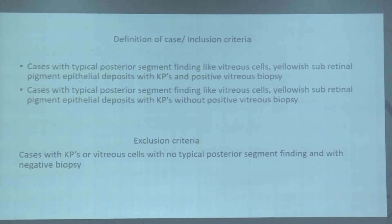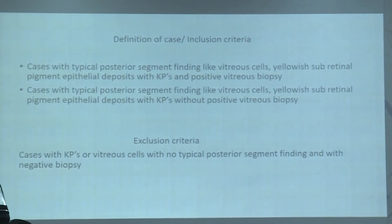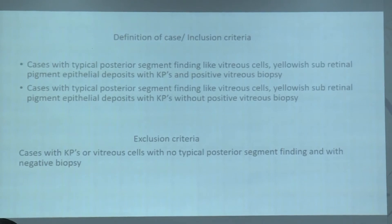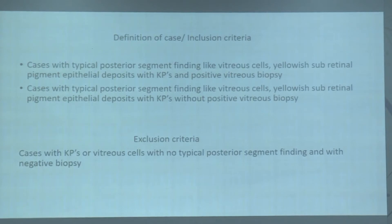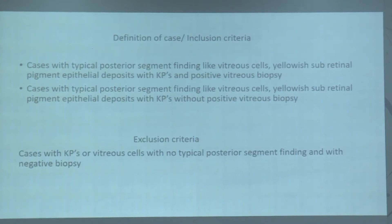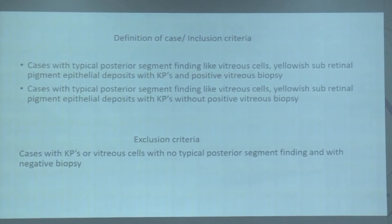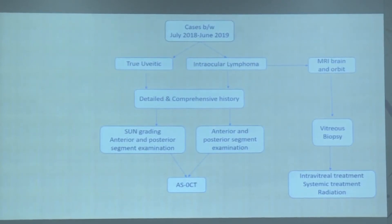We had an inclusion criteria. Cases with positive vitreous cells, typical sub-retinal and sub-RPE presentations with positive biopsy were included. Patients without biopsy were also included if they had typical intraocular lymphoma presentation, since biopsy can sometimes give a negative result. We excluded cases with KPs and vitreous cells but no typical posterior findings and no negative biopsy.